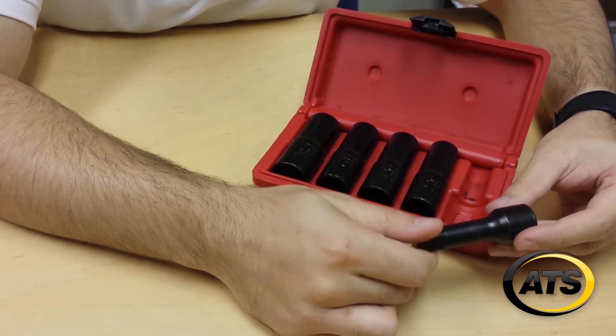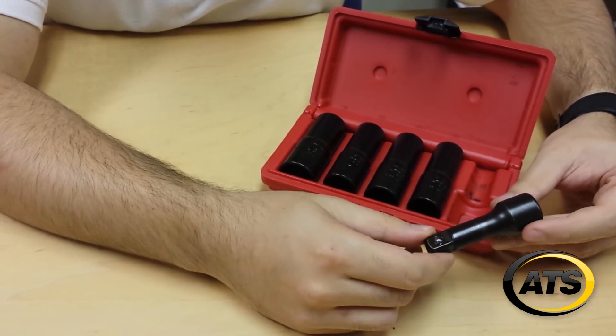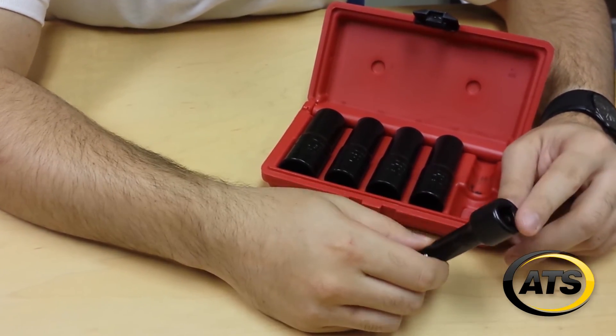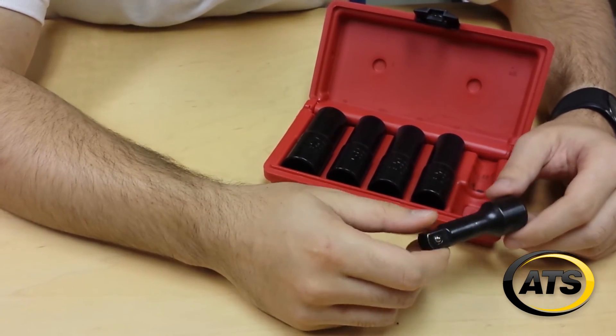And it also has, for mechanics out there that also want to use this if you have a short shank impact, it has a 3-inch extension also included in the set.